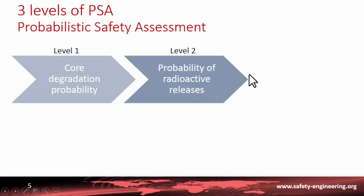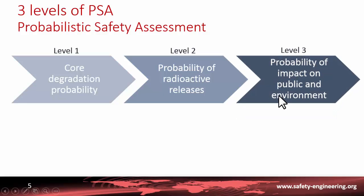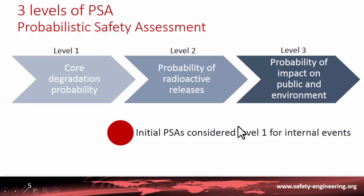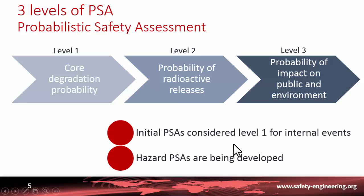Level two allows calculation of the probability of radioactive release. Level three calculates the impact on the public and environment. This depends on the direction of the wind during the release — the probability of wind direction is not the same — and also on the distance of the population. Initially, PSA was considering only internal events, but now probabilistic safety assessments including internal and external hazards such as flooding or seismics are being developed.